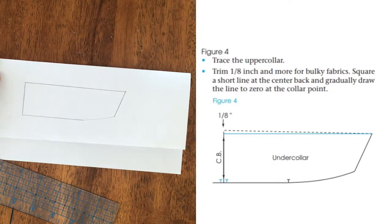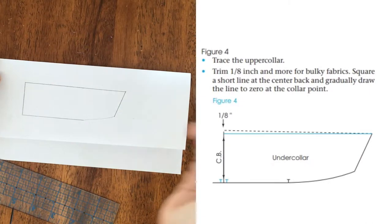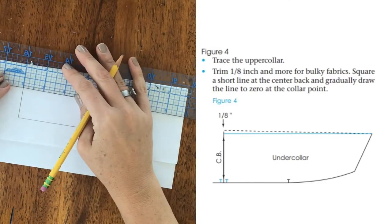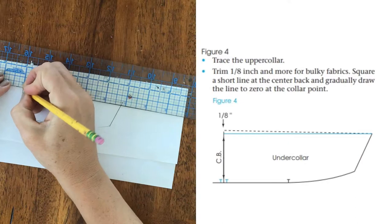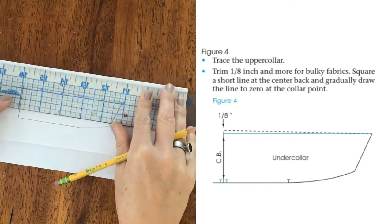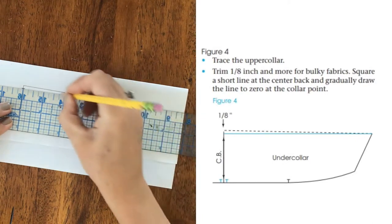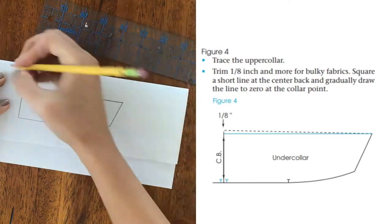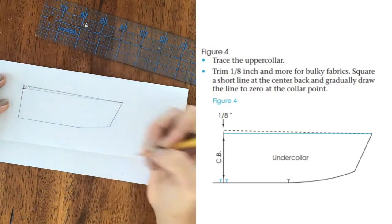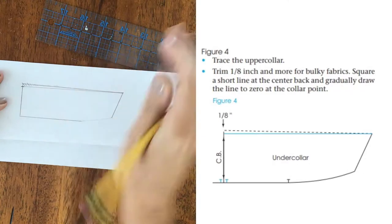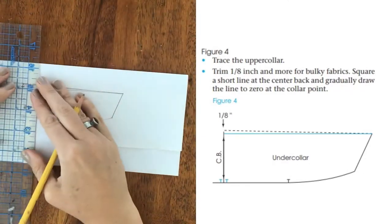Square a short line at center back and gradually draw the line to zero at the collar point. So they want it one eighth inch below where our center back is. That's just one of the boxes. It's one eighth inch, and they kind of just want this to blend into our collar point right here. And then this gets shaven away and tossed. Okay, cool. Yeah, that's it. That's your under collar.